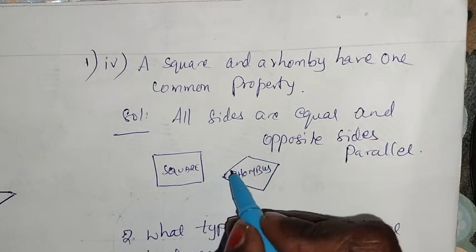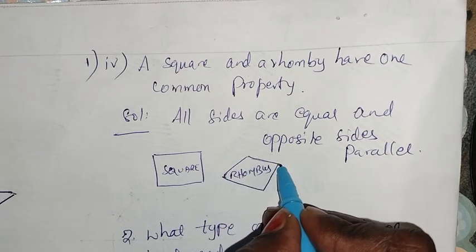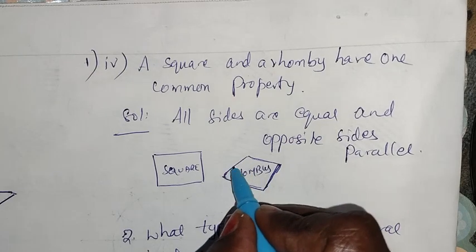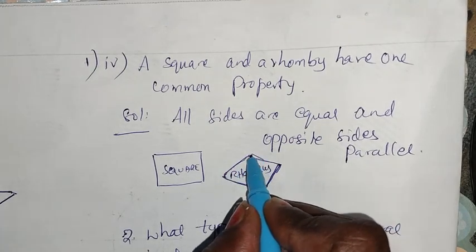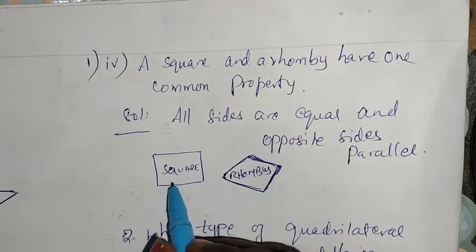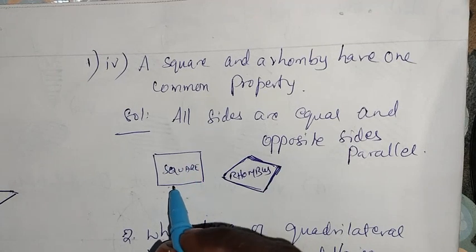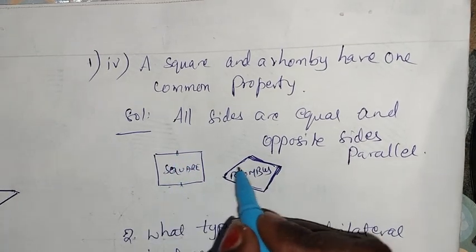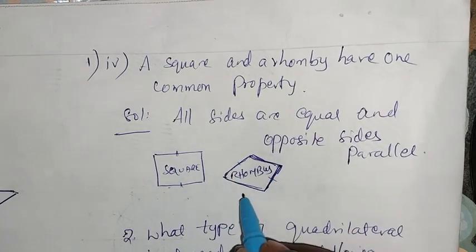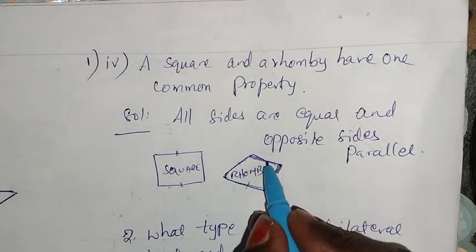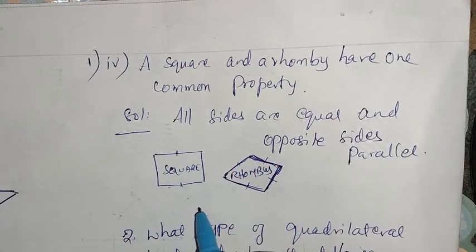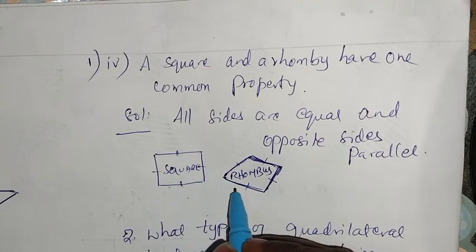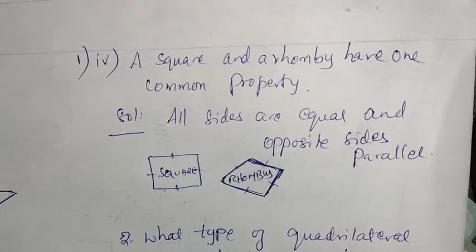All sides are equal and opposite sides are parallel. Opposite sides are parallel and all sides are equal — that is the common property of square and rhombus.